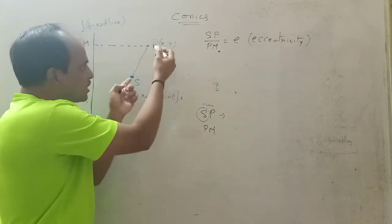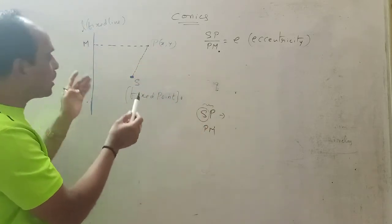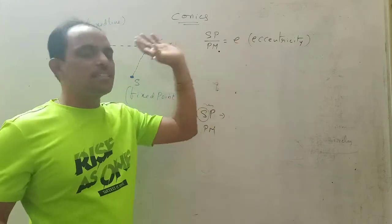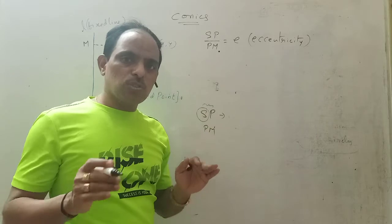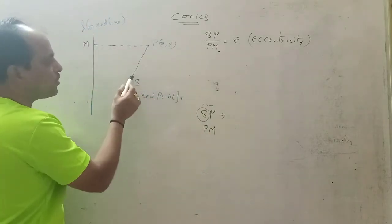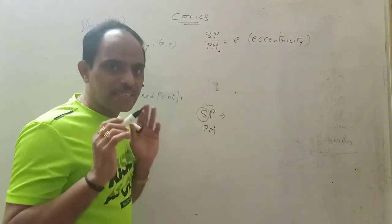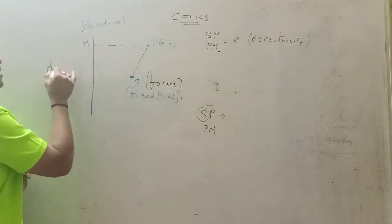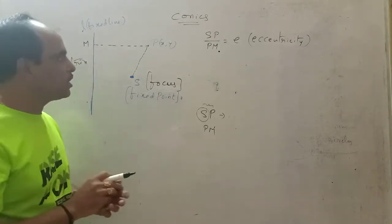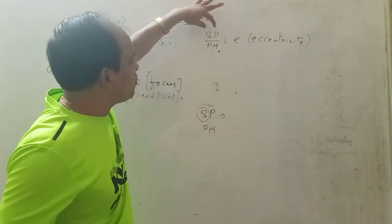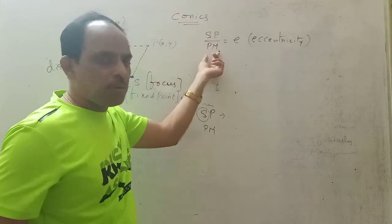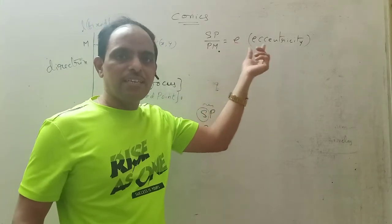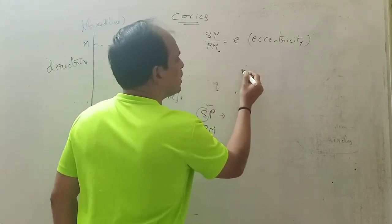Here, S means a fixed point and the fixed line is the directrix. The distance from the fixed point to the variable point is SP, and the perpendicular distance from the variable point to the fixed line is PM. The ratio SP/PM is called eccentricity. The fixed point is known as the focus, and the fixed line is known as the directrix.